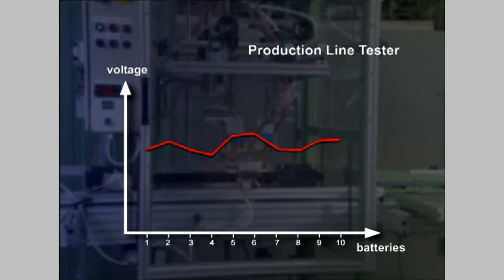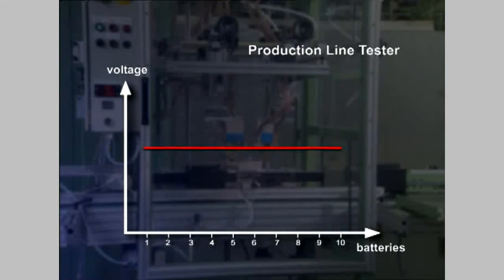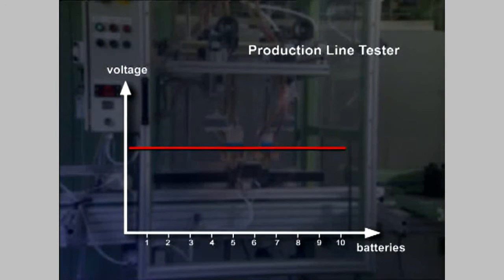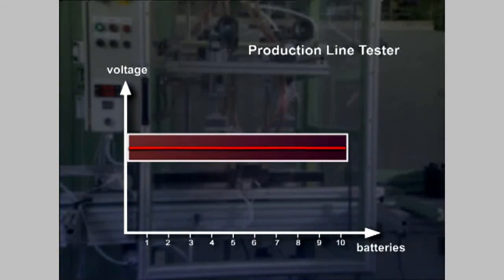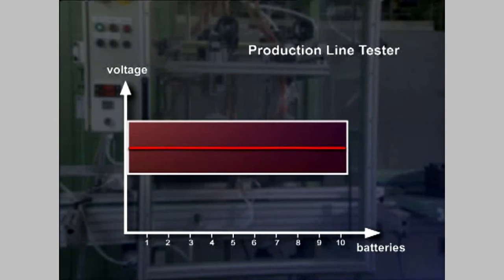For each test criteria, the average value is automatically calculated in a test run. This is the initial value around which the tolerance range is set. The width of the range is determined by the stringency of the test.